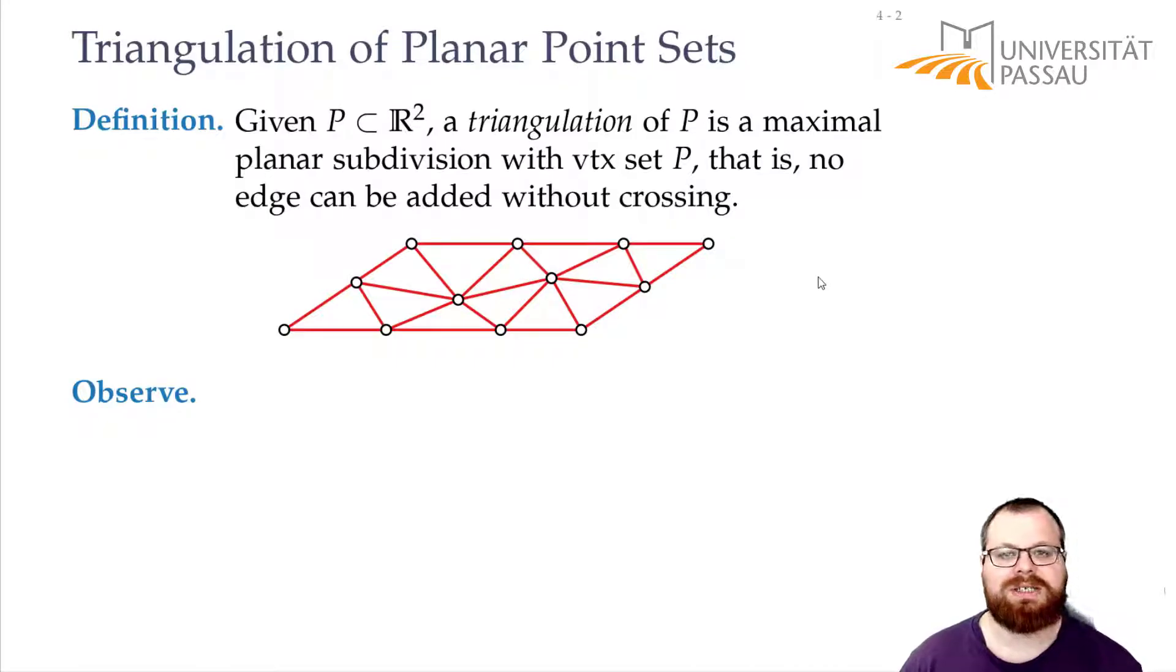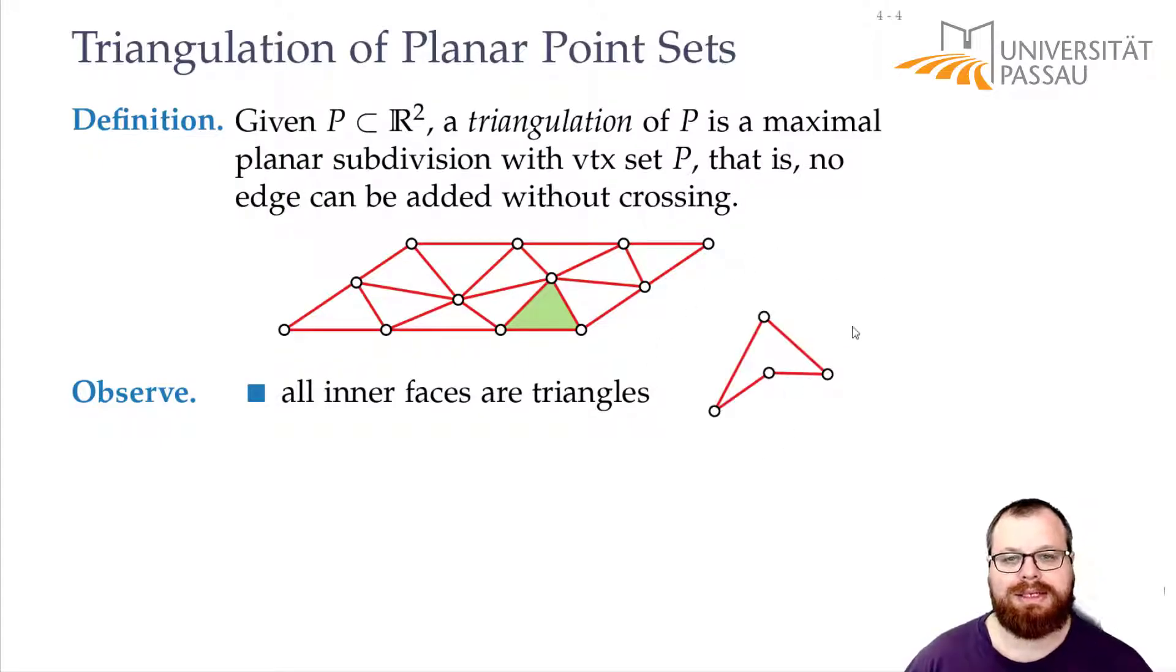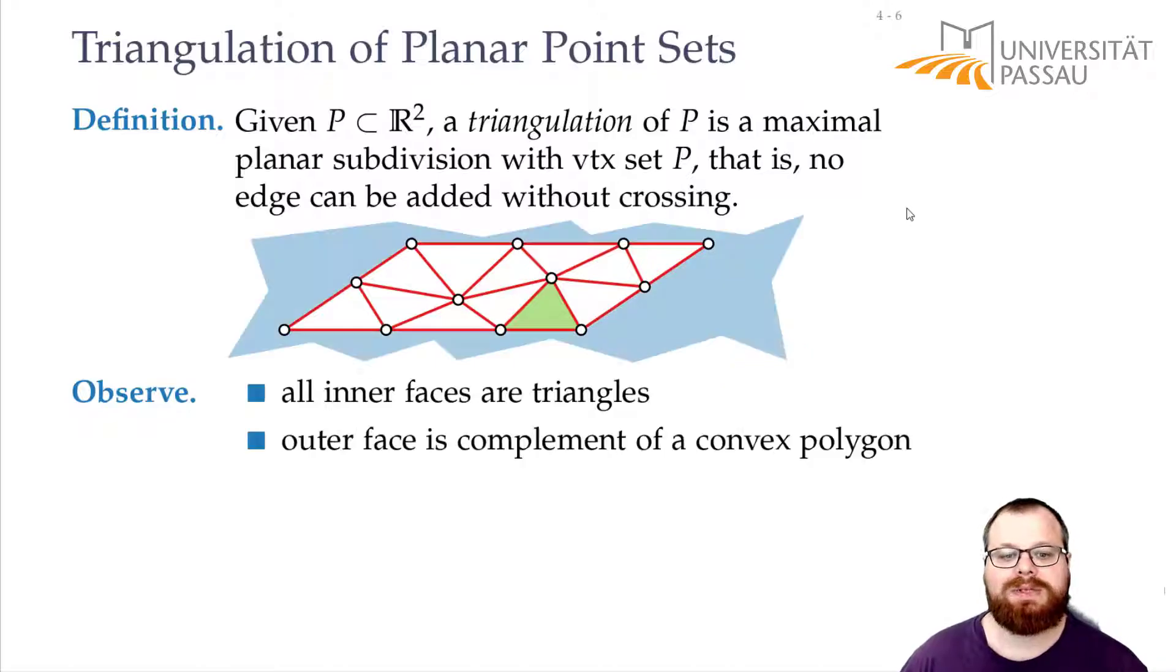There are three observations we want to do, and there's a reason this is called a triangulation—that's because all of the inner faces are triangles. Whenever we have any face like this that's not a triangle, then we can still add one edge to it and then it's not maximal because we can subdivide the plane even more. What else do we observe?